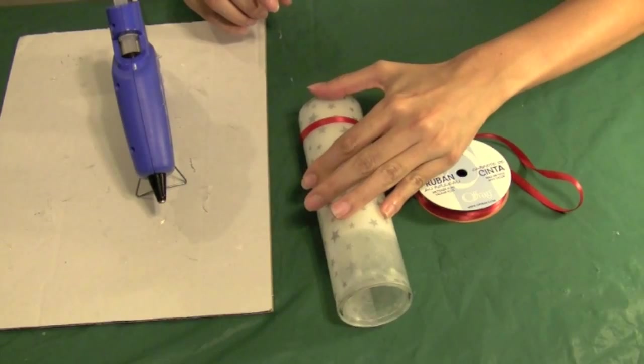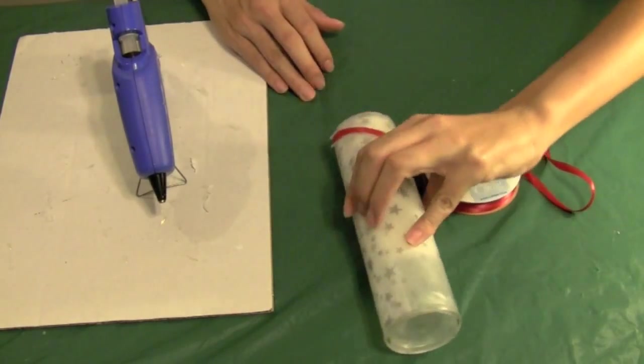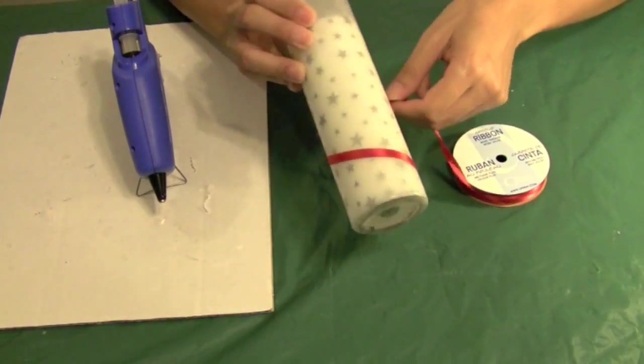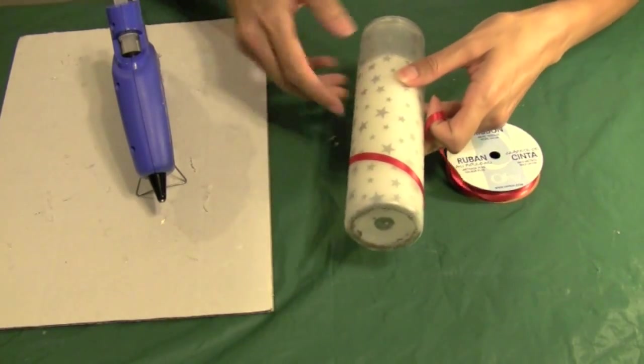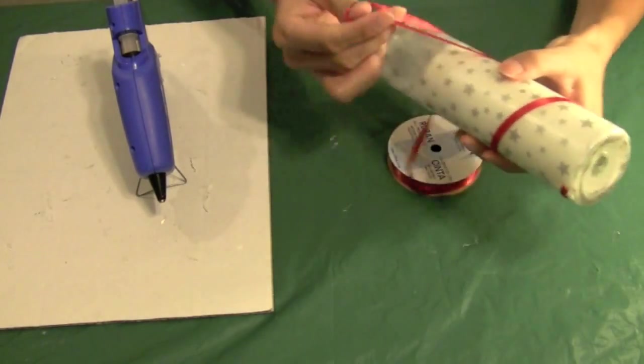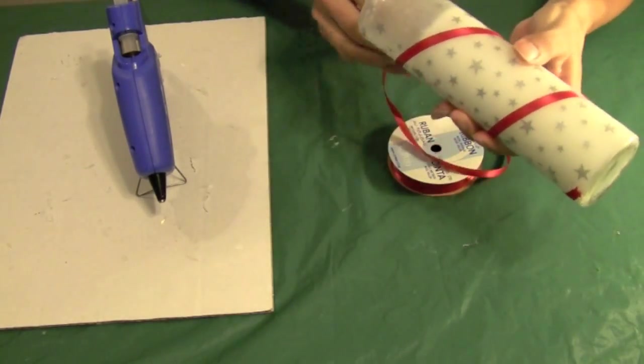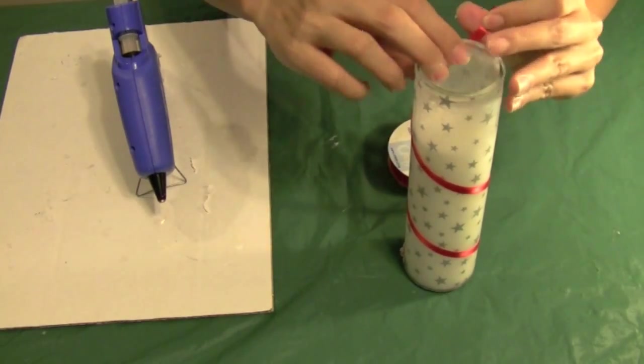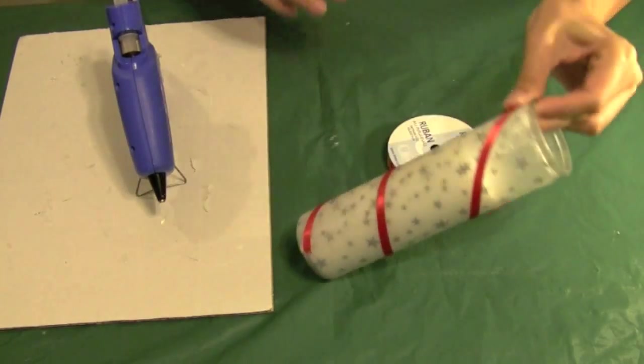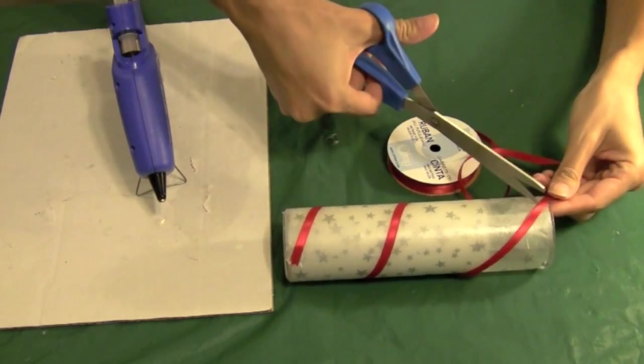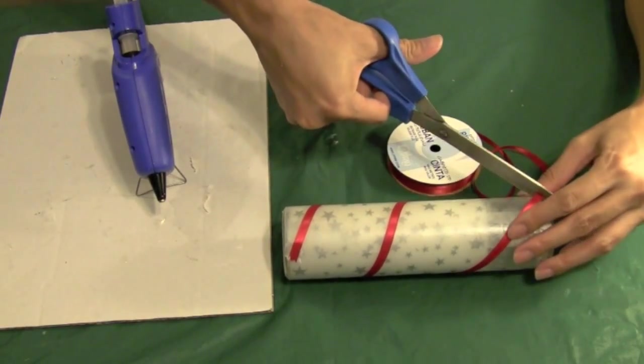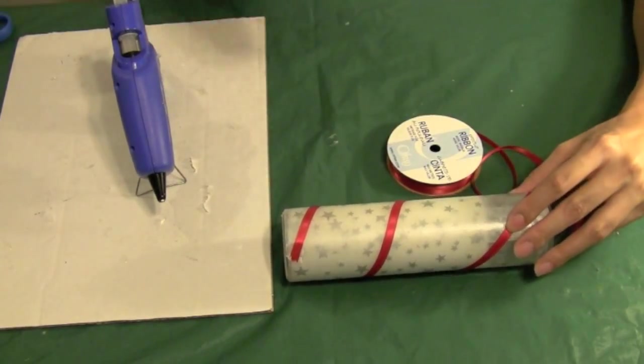I'm going to roll it over and move it into place right here. And then from here, I'm going to wrap around the ribbon in a little spiral pattern until I get to the top of my candle. And then I will cut it right here and just add another dab of hot glue to secure it in place.